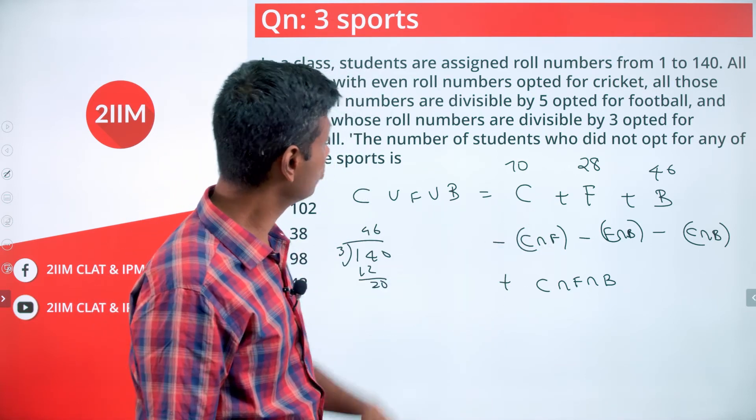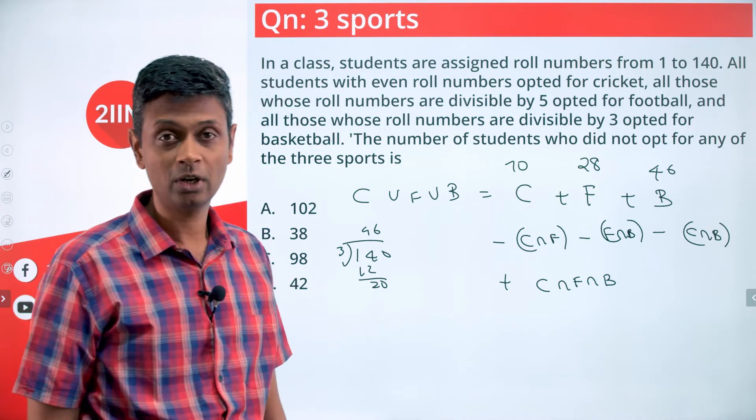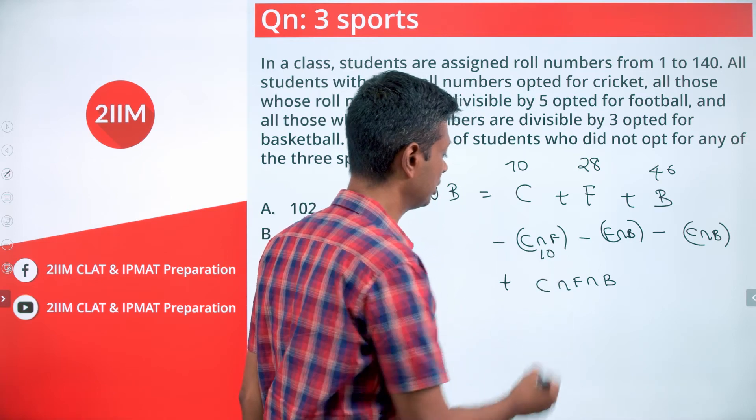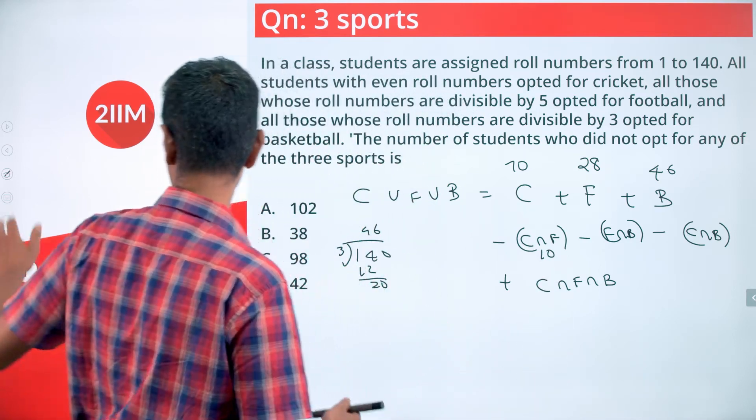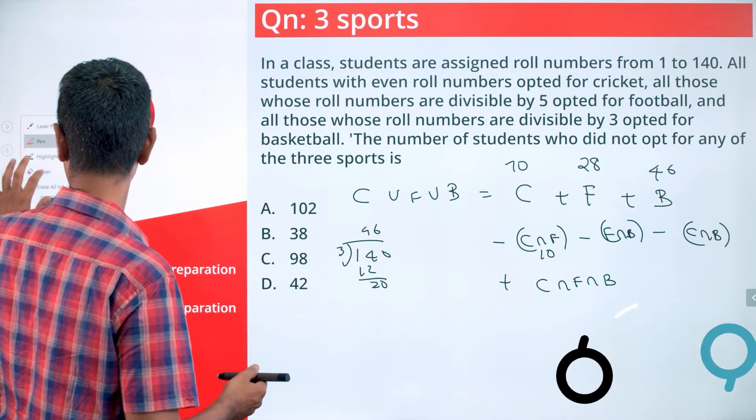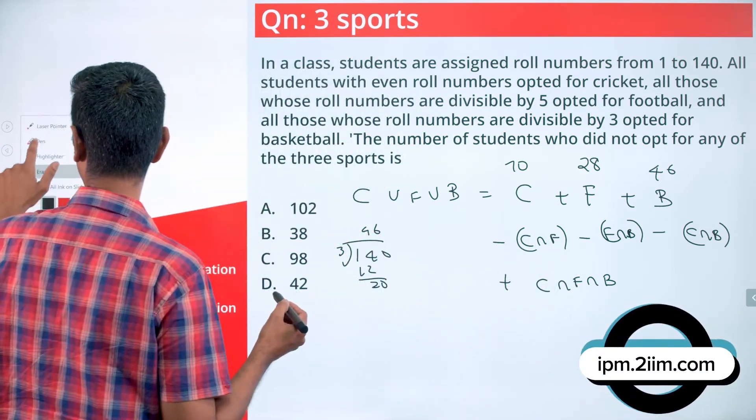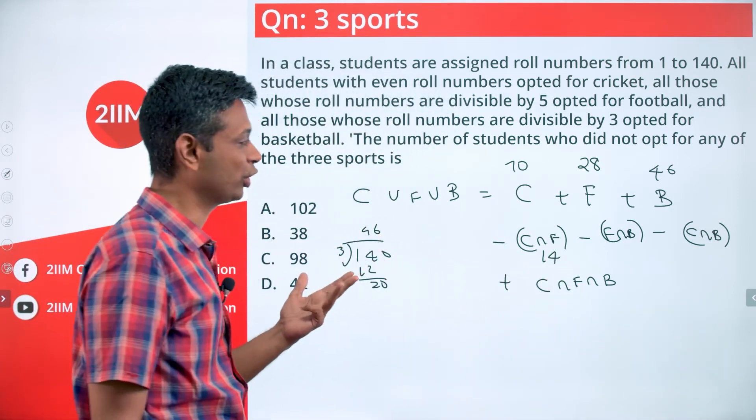Cricket intersection football: even numbers that are multiples of 5, which are multiples of 10. How many multiples of 10 are there? There are 14 multiples of 10 (10, 20, 30, 40... all the way to 140).